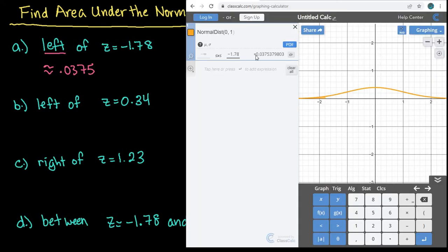Okay, moving to the next one, we're going to delete out the negative 1.78, and this time we want the left of 0.84. So 0.34 we would enter in, and you can see that this time it falls above the mean.